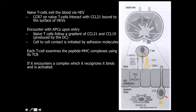The naive T-cells are going to exit the blood via the high endothelial venule. CCR7 — that's the receptor on the naive T-cells — is going to interact with CCL21 bound to the surface of the high endothelial venules. They're going to encounter antigen-presenting cells upon entry, usually dendritic cells. They're going to follow a gradient of CCL21 and CCL19, which are both going to be produced by the dendritic cells, which is going to lead them to it.